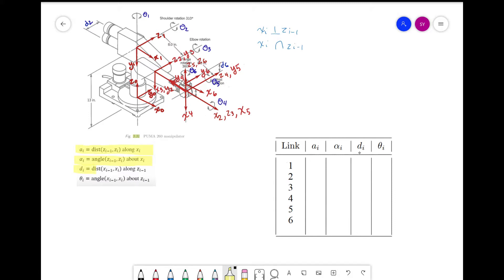Then we have d_i, which is the distance from x of i minus 1 to x_i along z of i minus 1. And we have theta, which is the angle between x of i minus 1 and x_i about z of i minus 1. We can keep in mind that a_i and alpha_i are about x_i, and d_i and theta_i are about z of i minus 1.